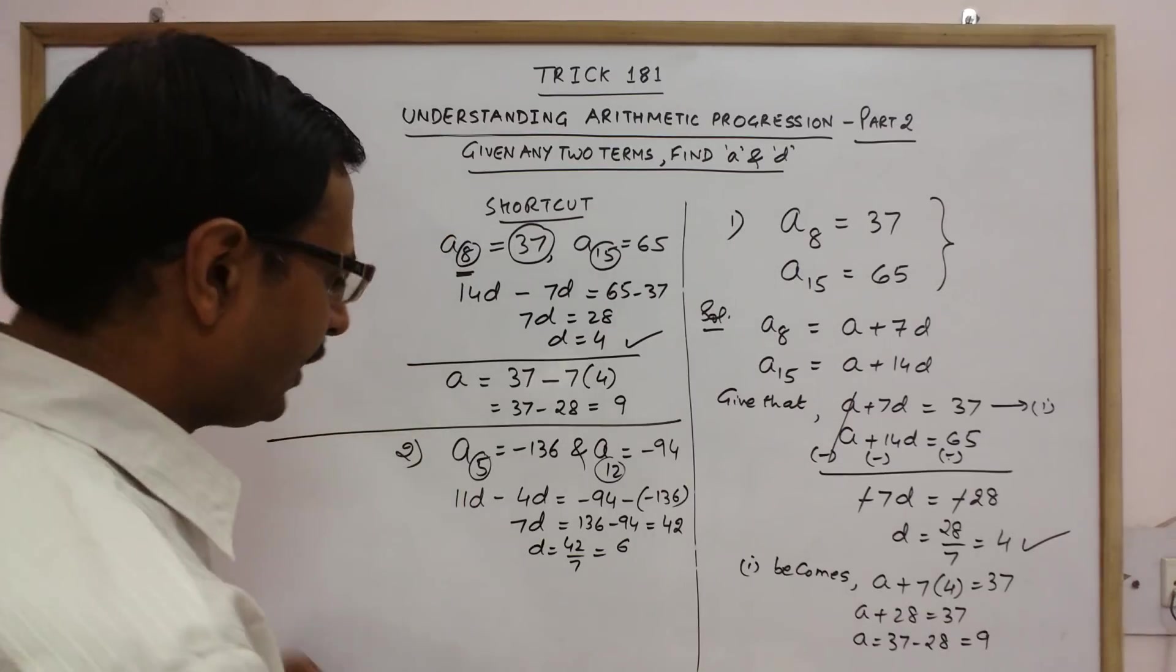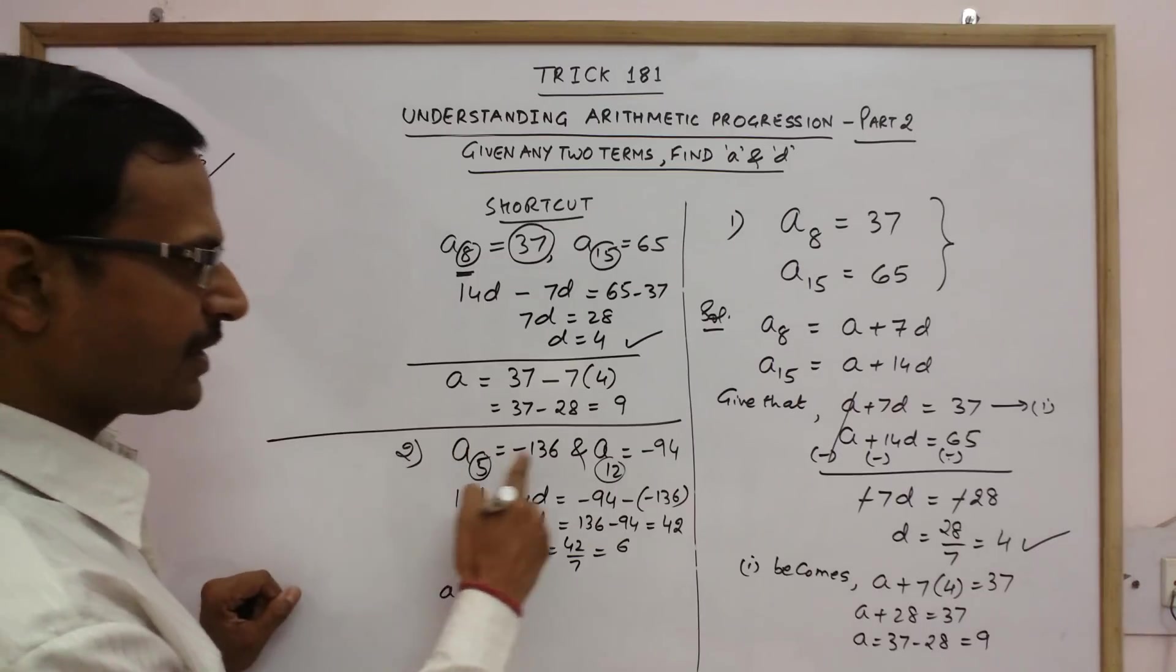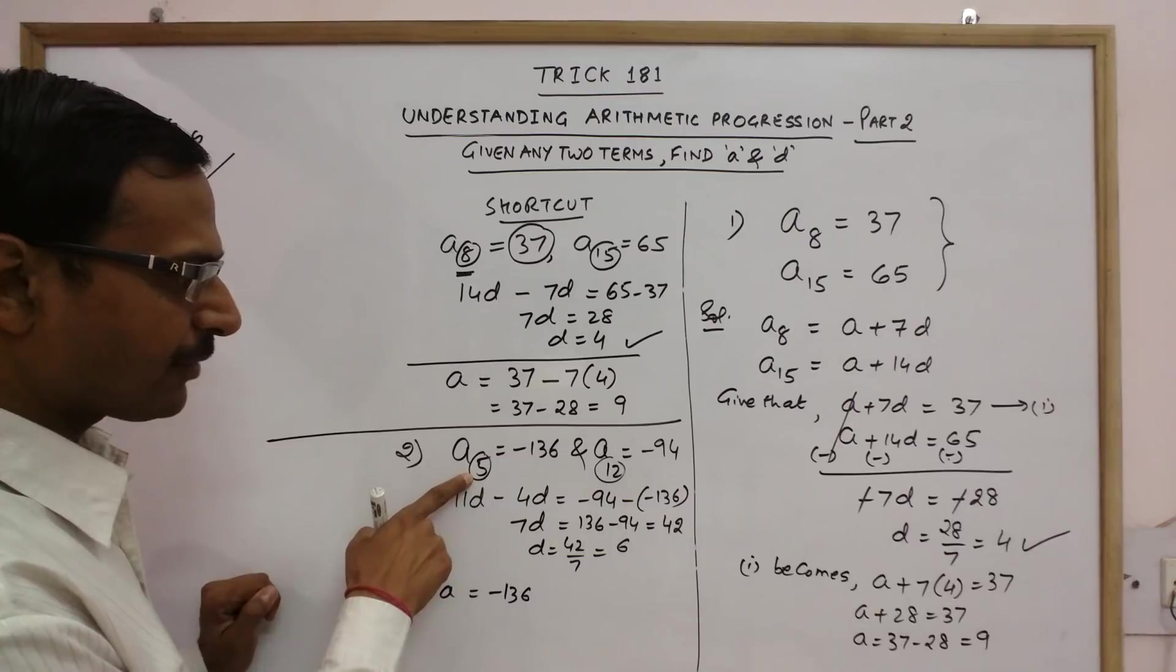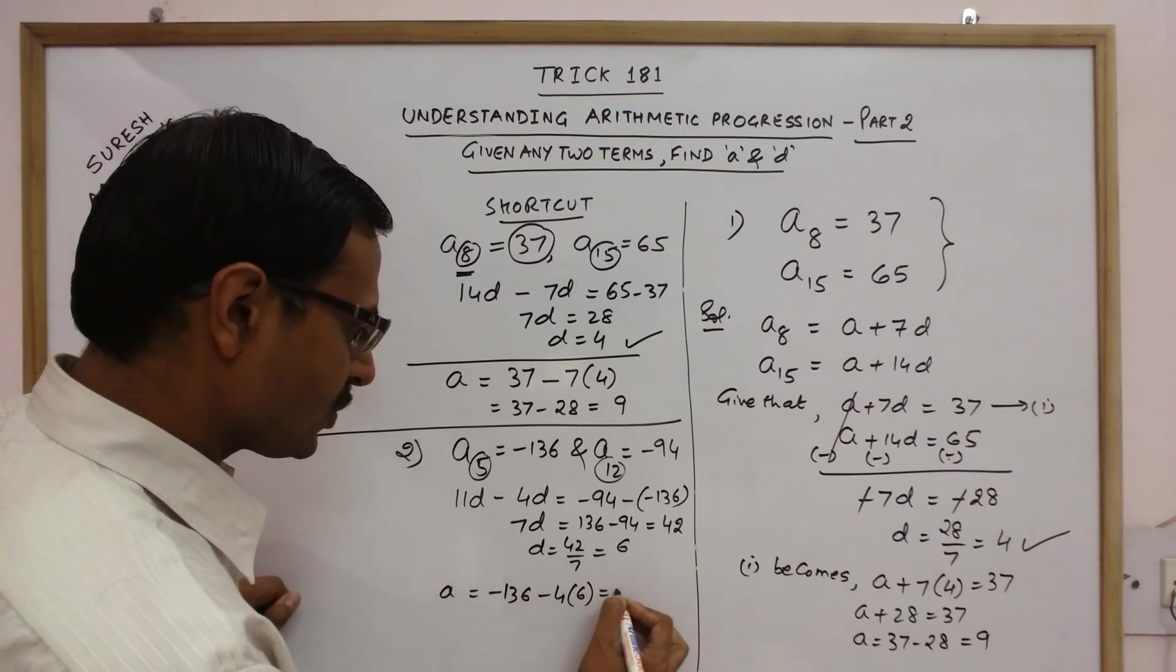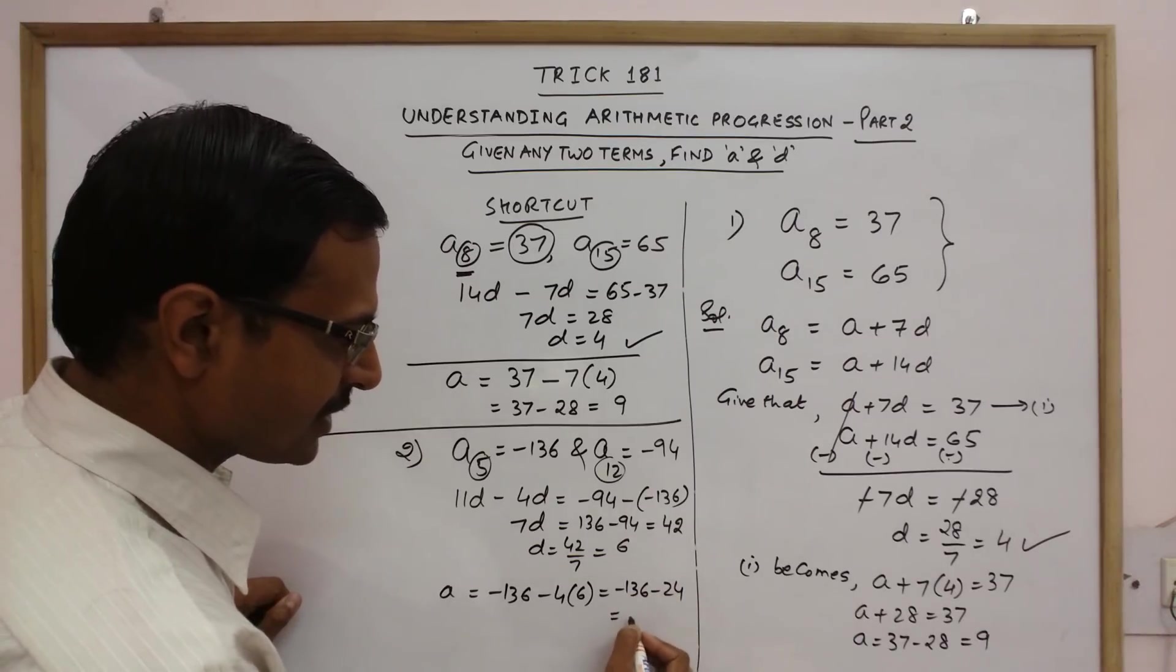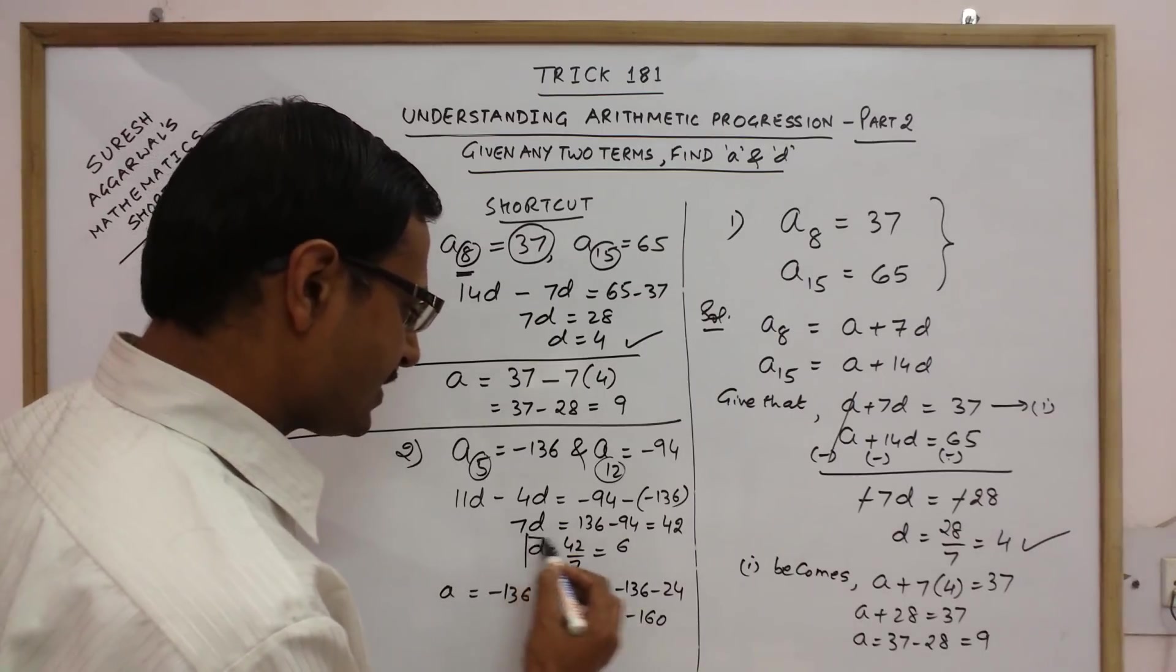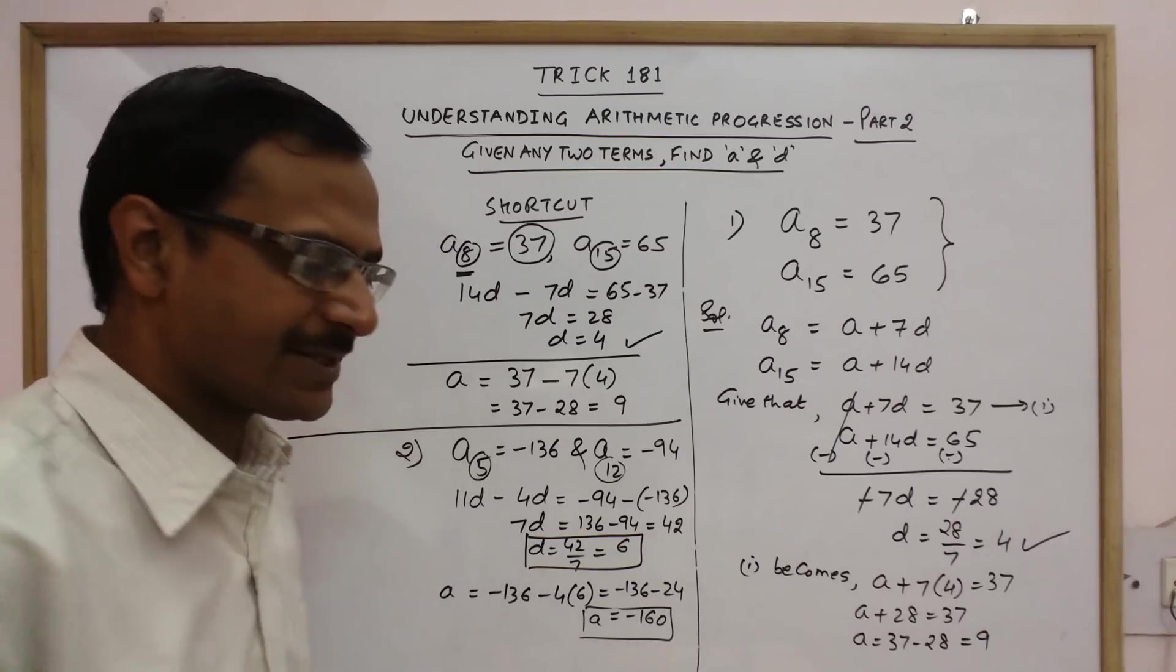Now for finding the value of A, just consider this minus 136 and subtract 4D from this. D is 6. So minus 136 minus 24. So answer is minus 160. So both answers are there. D is 6 and A is minus 160.